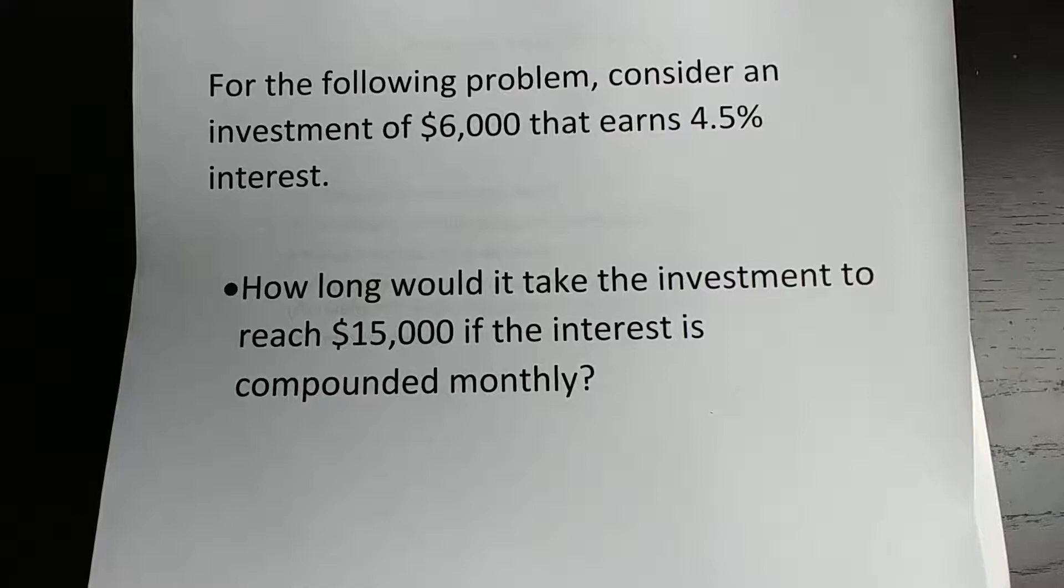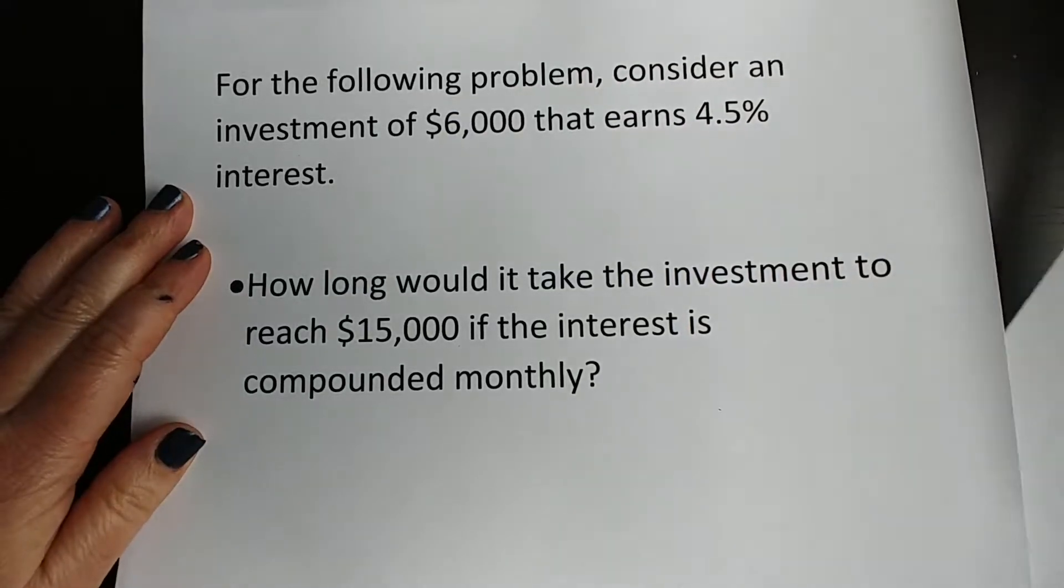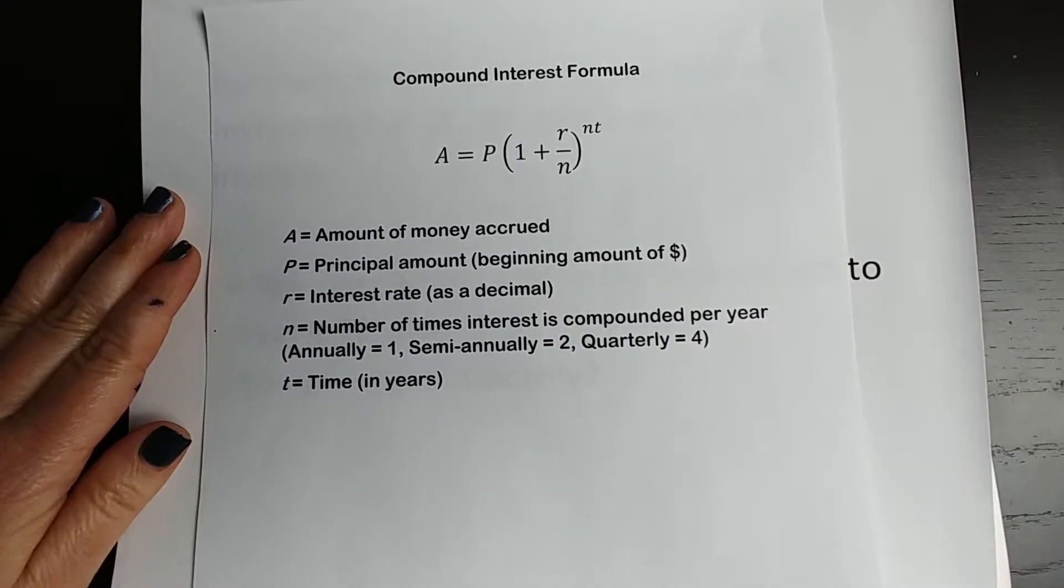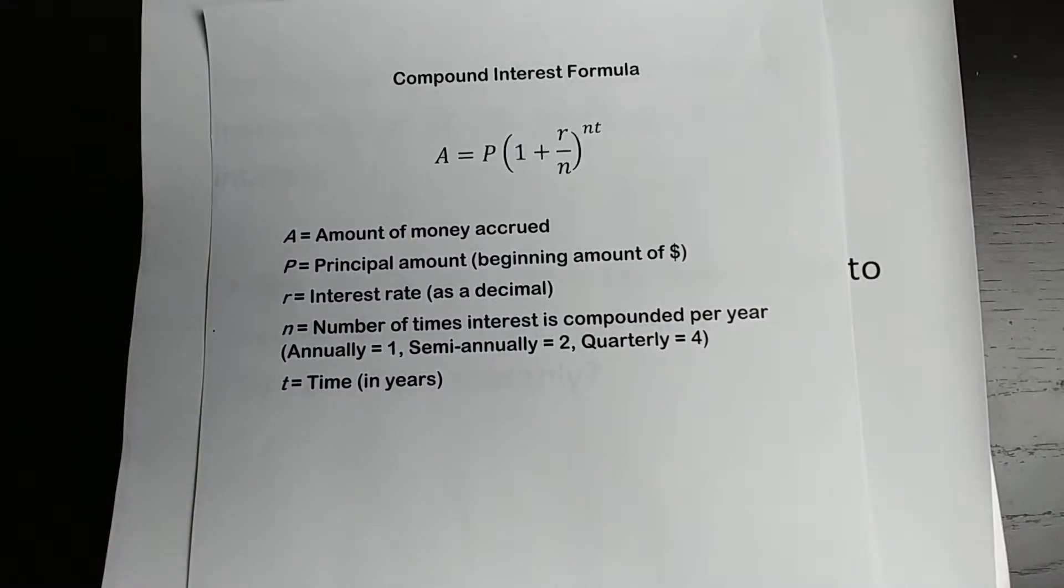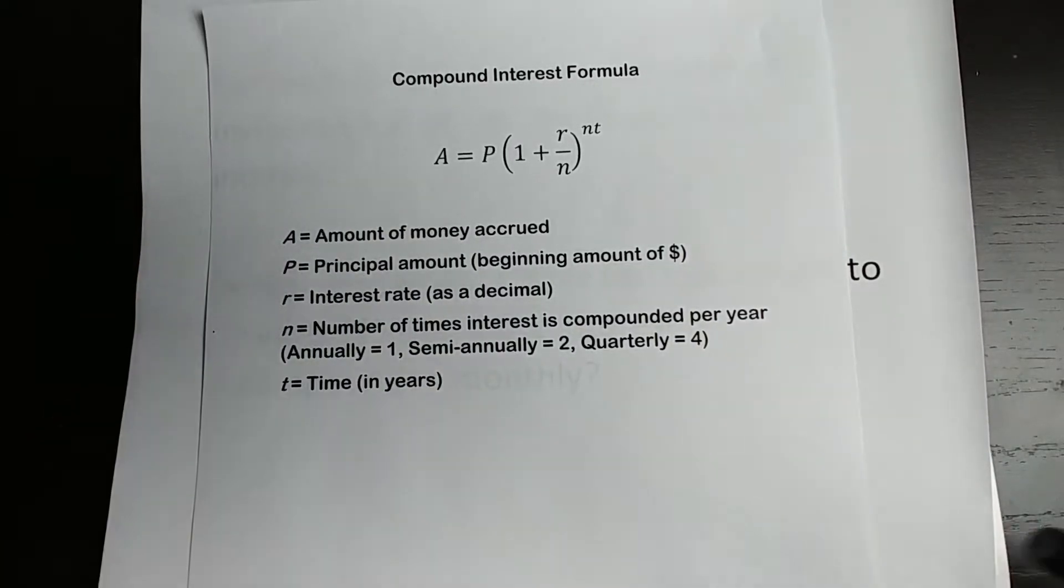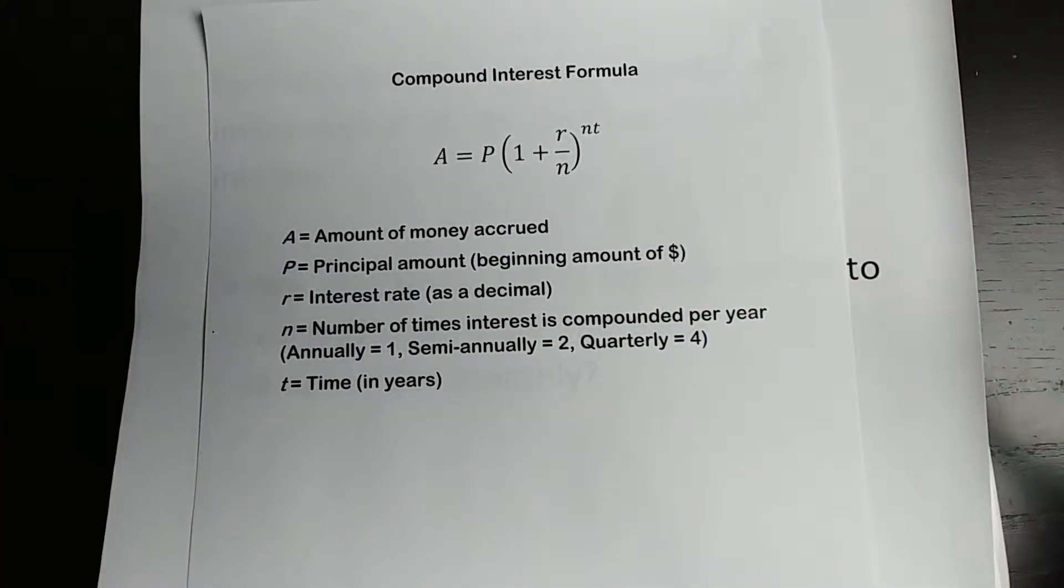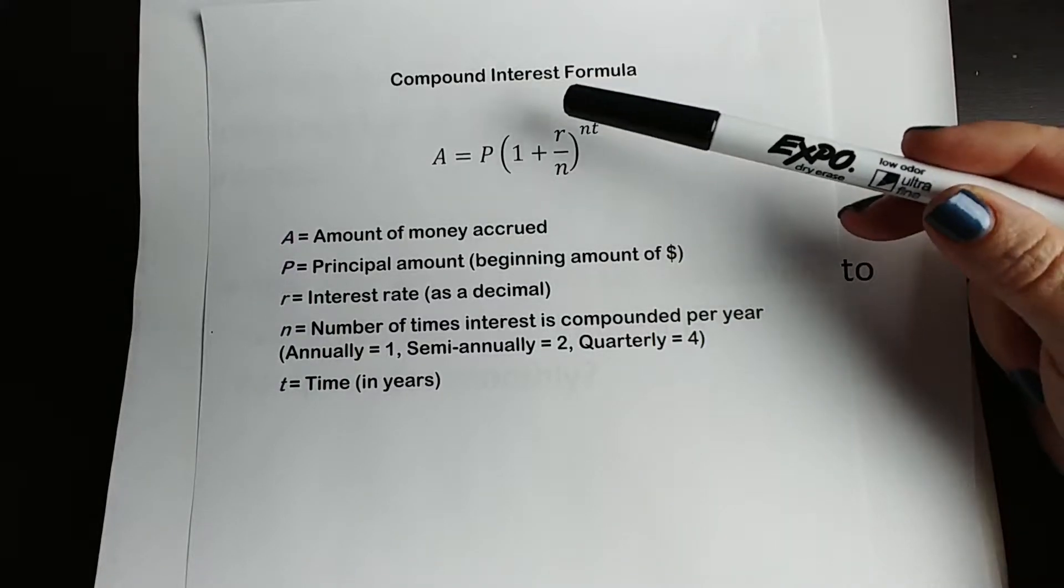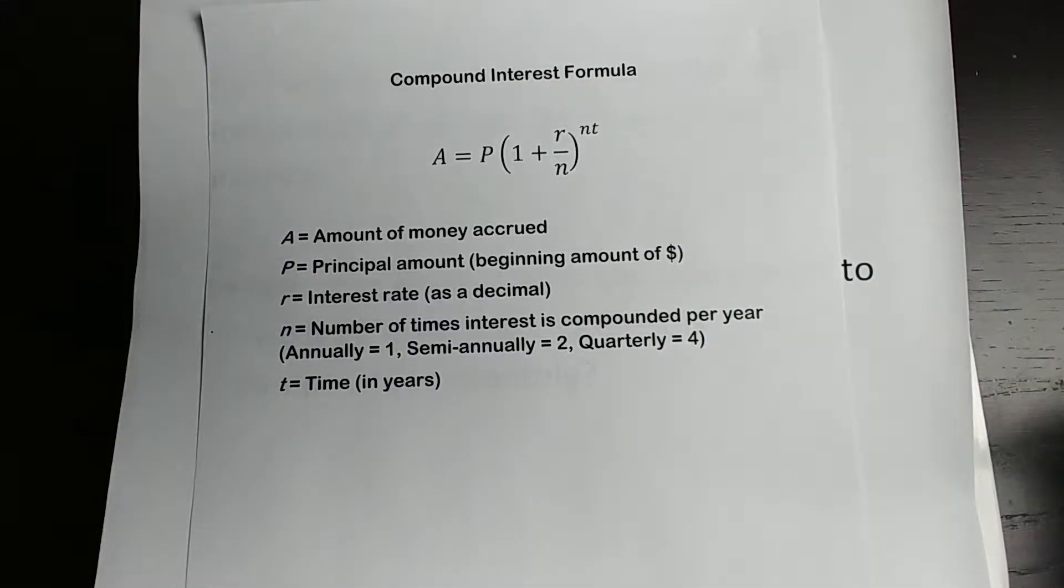Okay, so before we do anything, let's look at the compound interest formula. The compound interest formula states that A equals, so A, the accrued amount, so the amount that you've earned over time, is equal to the principal or the initial amount, the amount you started with or deposited or invested, times 1 plus the rate over N, so the rate written as a decimal, N is the number of times per year that your interest is compounded, all raised to the NT power.